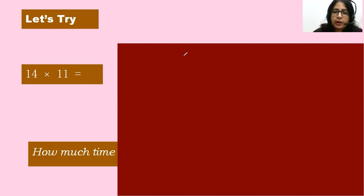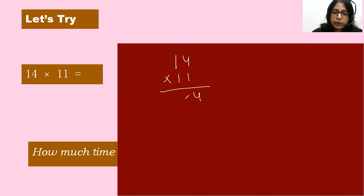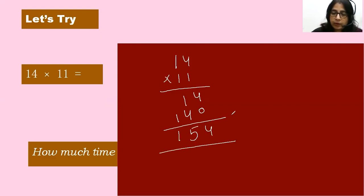First I will go with the conventional math. What you will do for 14 into 11 — if you have learned the table of 14 maybe you can solve, but kids of class one, two, and three don't know the table of 14. So in conventional math: one into four, then one into one, then put zero, then four, four, and one — you get the answer 154. What you have done — three steps. Now what I am going to teach you is only one step.